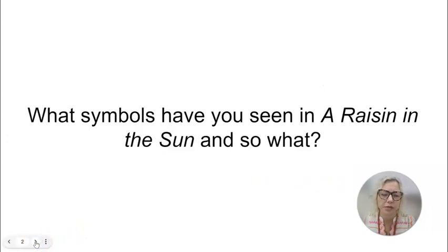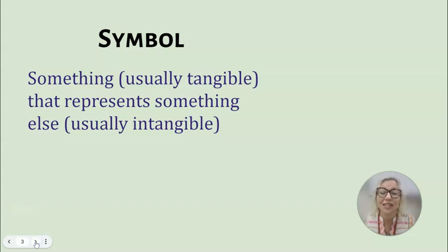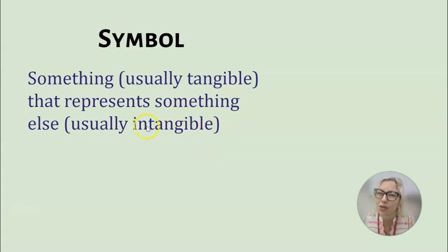So let's talk about symbolism a little bit. What symbols have you seen in A Raisin in the Sun? That's the question I want you to have in your mind as we go. Let's take some notes. First of all, what is a symbol? Here's a definition for you. It's something usually tangible — tangible means something you can touch, see, feel — that represents something else, usually intangible. Intangible is something that you can't touch, see, or feel. So it's something that is solid that represents something more of a feeling or an idea.